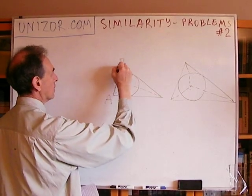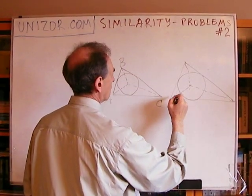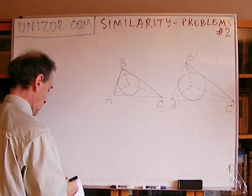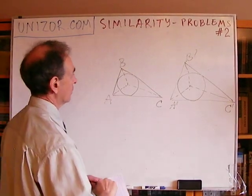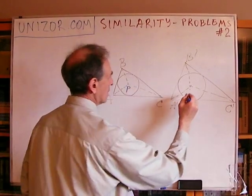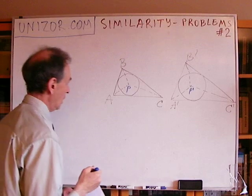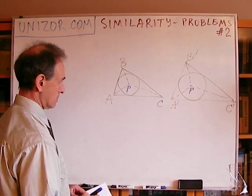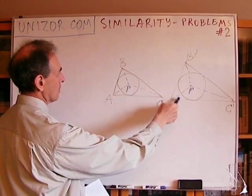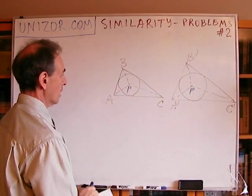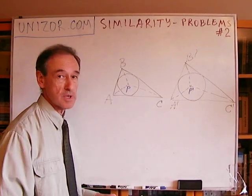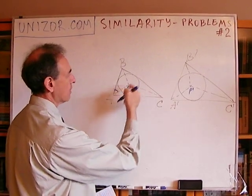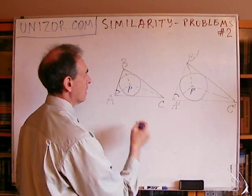Let's call them ABC and A prime, B prime, and C prime. Let the centers be P and P prime. Now, you know that similar triangles have congruent angles, which means this angle is congruent to this, this to this, and this to this. Now, halves of these angles will also be congruent — that is, the angle bisectors. So half of this angle, the bisector, and half of this angle: they will be congruent.